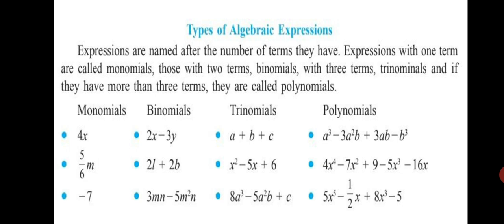So, now, types of algebraic expressions. Expressions are named after the number of terms they have. Expression with one term are called monomials. Monomials, those with two terms, binomials, with three terms, trinomials. And if they have more than three terms, they are called polynomials.